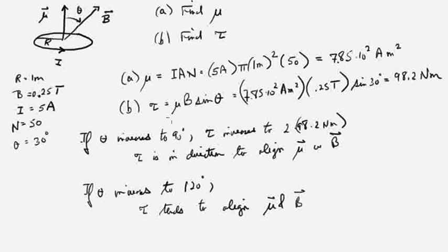If theta is increased from 30 degrees to 90 degrees, then the torque will increase to its maximum value. The sine of 90 is as large as sine will get, one. And it will increase from 98.2 to two times that value.